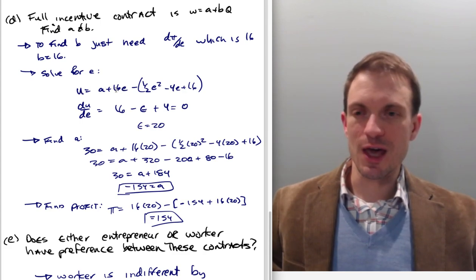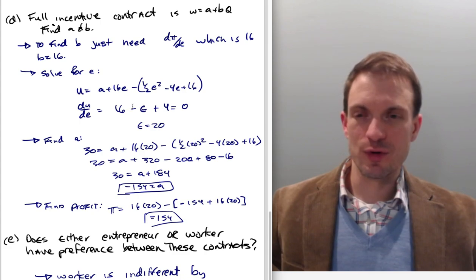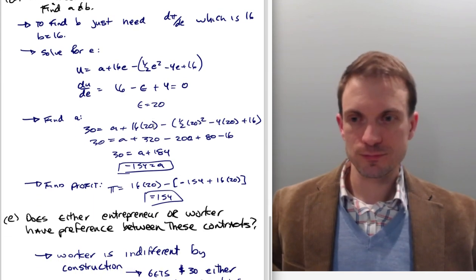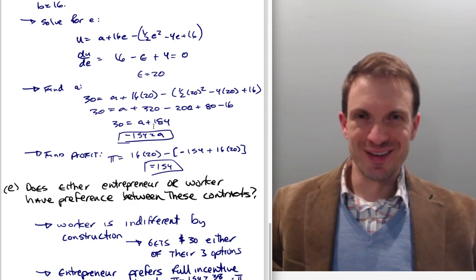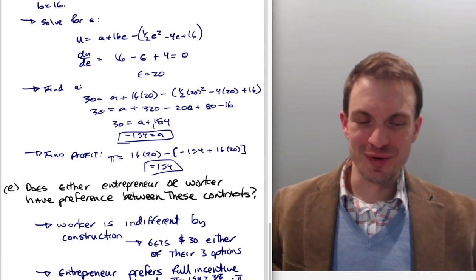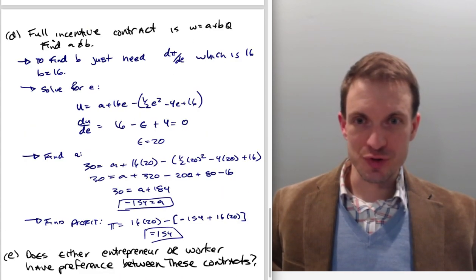Now we have to solve for the associated effort level when they get the full returns of their effort. So utility is going to be A + 16E minus this expression, effort cost. And if we differentiate, we'll find, oh, 16 - E + 4 means they'll set an effort level of 20. Alright, so if our worker is setting an effort level of 20, what's going to be the fixed component that we're going to need to set to complete this contract?